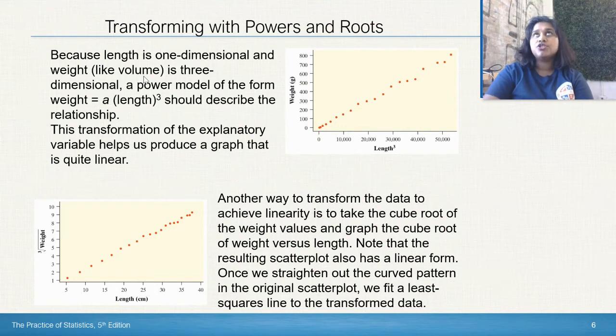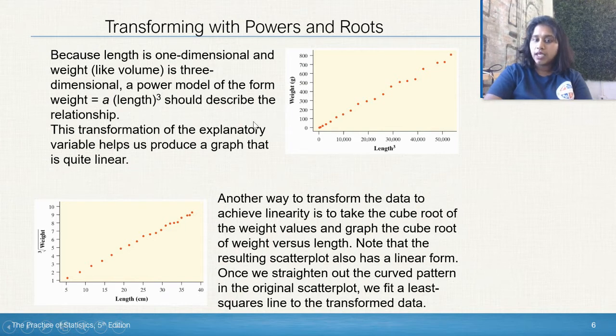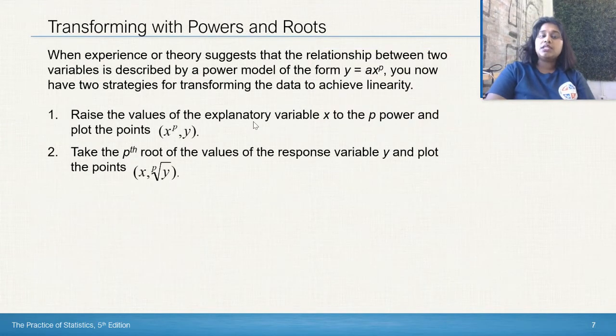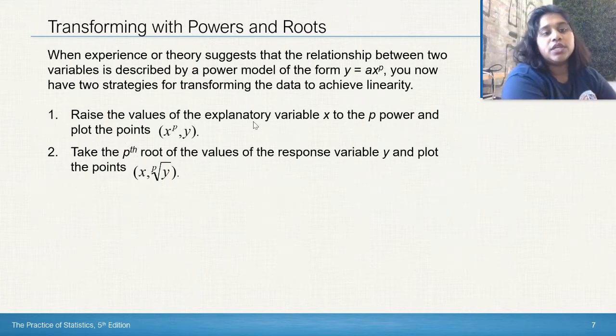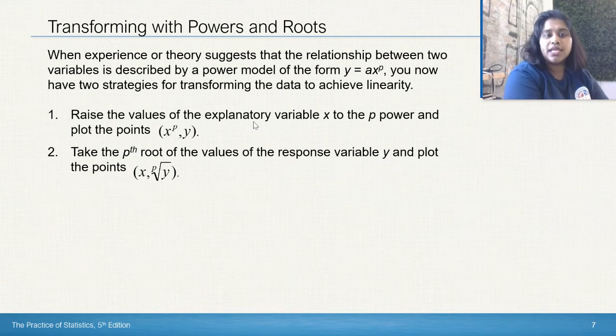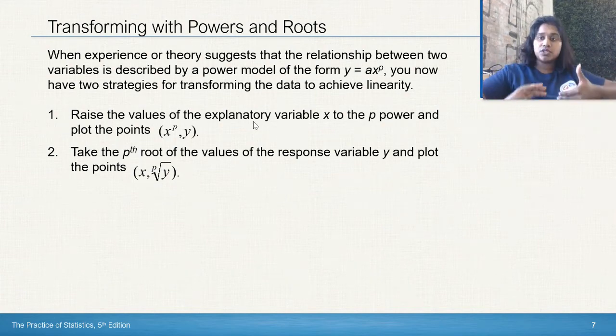Another way to transform the data to achieve linearity is to take the cube root of the weight versus values and graph the cube root of the weight versus the length. Note that the resulting scatter plot also has a linear form. So here we took the weight and the length cubed, and here we took the cube root of the weight and the length. These are two uniquely transformed scatter plots. You have a least squares regression line that can fit either of these transformed data now. When experience or theory suggests that the relationship between two variables is described by a power model, you now have two strategies for transforming the data. You can either raise the values of the explanatory variable x to the power p and plot those points, or you can take the pth root of the values of the response variable y and plot those points.